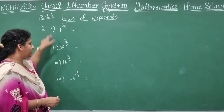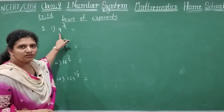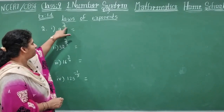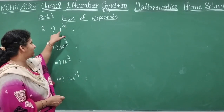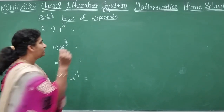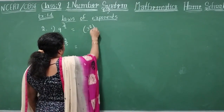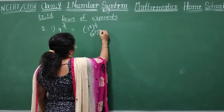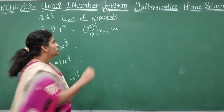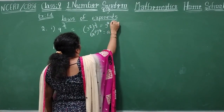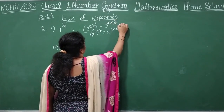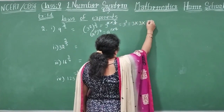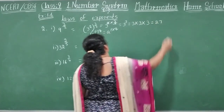Your second main has four sub-questions. First: 9 power 3 by 2. The denominator exponent is 2, and 3 times 3 is 9, so write 9 as 3 square whole power 3 by 2. Applying Law 2 — A power P whole power Q equals A power PQ — you get 3 power 2 into 3 by 2, the 2s cancel, leaving 3 power 3. That is 3 multiplied 3 times: 3 into 3 is 9, 9 into 3 is 27, your answer.